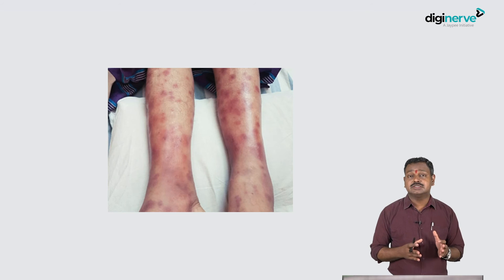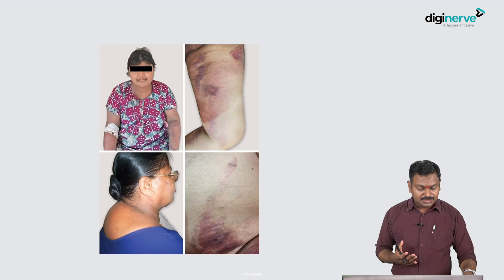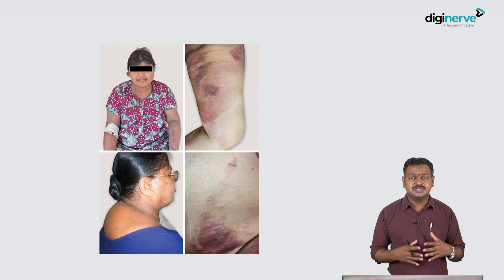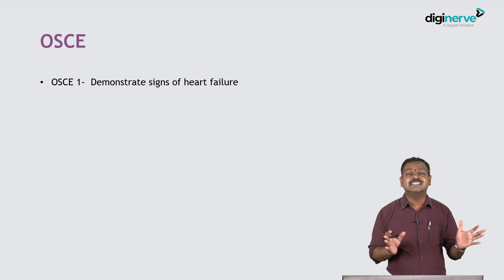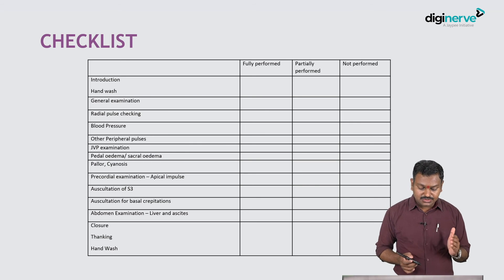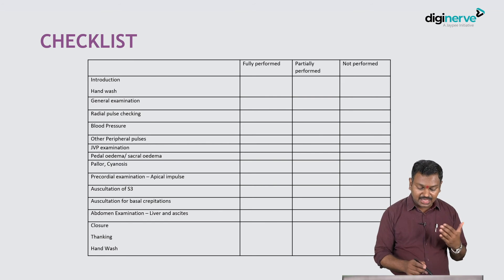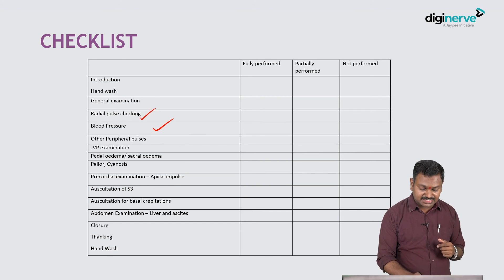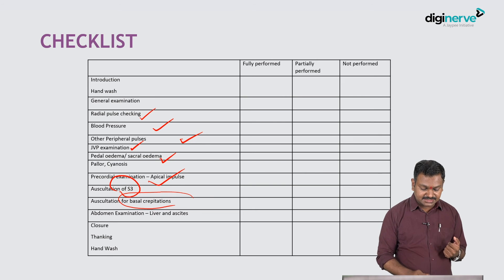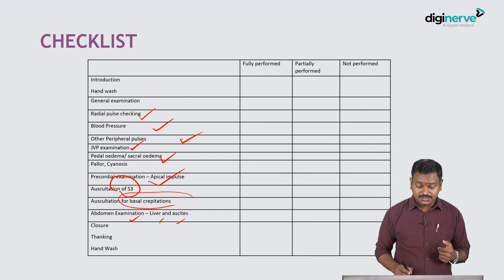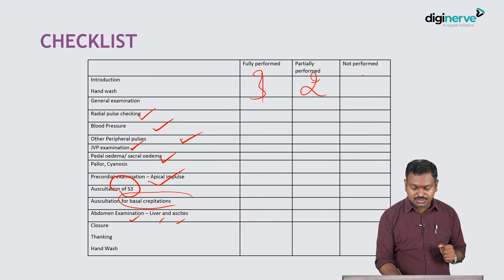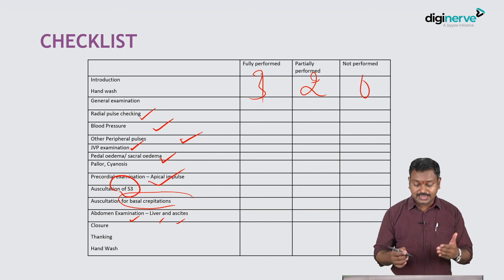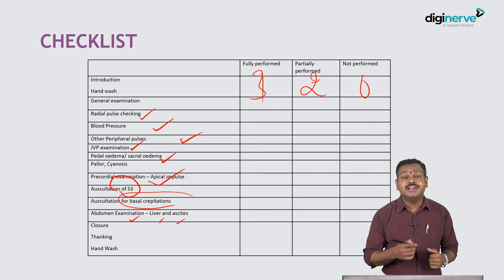Another spotter example: obesity, striae, pigmentation, buffalo hump, moon face - this is Cushing's syndrome. In the OSCE pattern, a manned station may ask you to demonstrate signs of heart failure. The checklist the observer uses includes: did you speak to the patient, did you do a hand wash, did you check the general examination, pulse, blood pressure, peripheral pulses, JVP, pedal edema, apical impulse, auscultate for S3, auscultate for basal crepitations, abdominal examination for liver and ascites, and how did you close? Scores of 3, 2, or 0 are given per item.